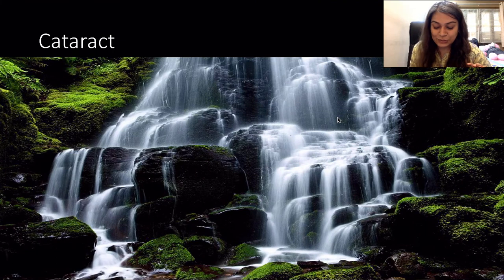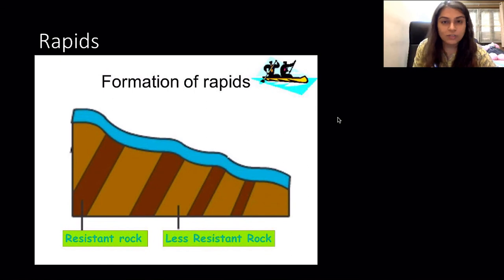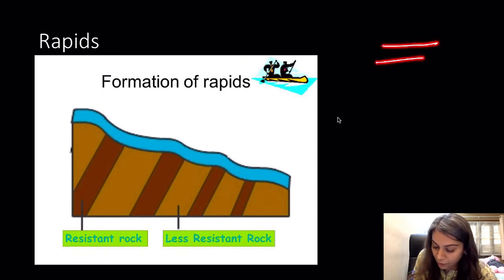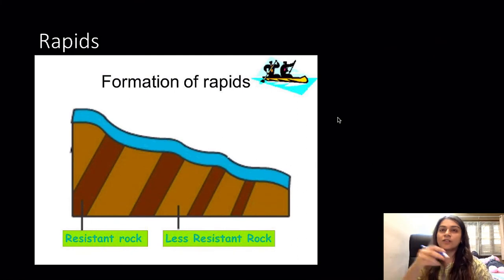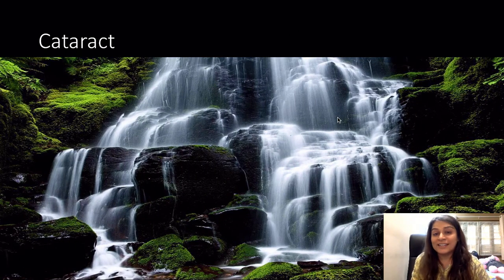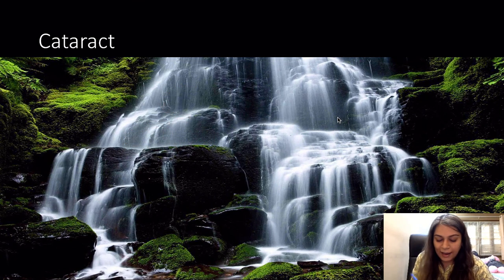A cataract is also a kind of waterfall but not exactly the same. If there is an alternation of hard and soft rock in a horizontal format — hard rock, soft rock, hard rock, soft rock — the soft rocks erode quickly, creating a stair-like formation. This is called a cataract.